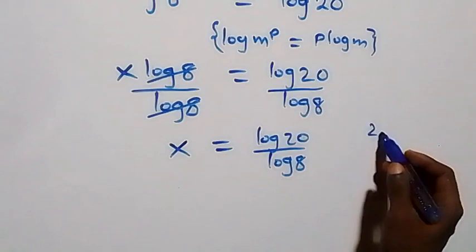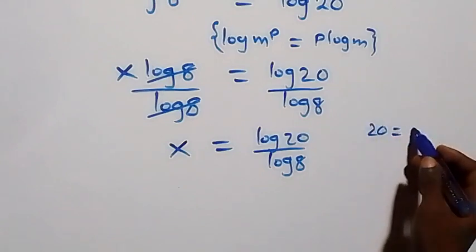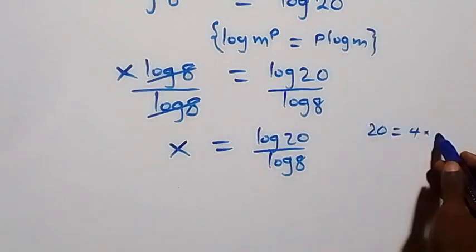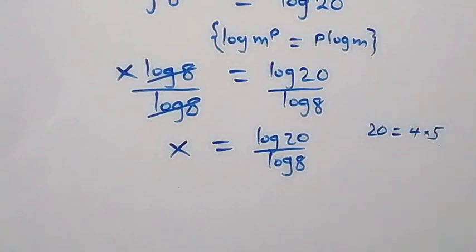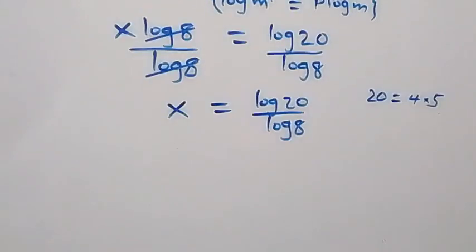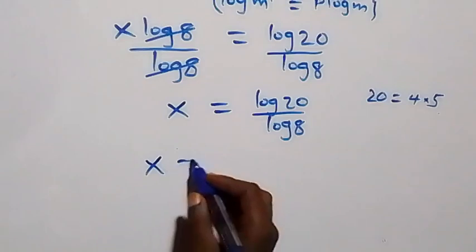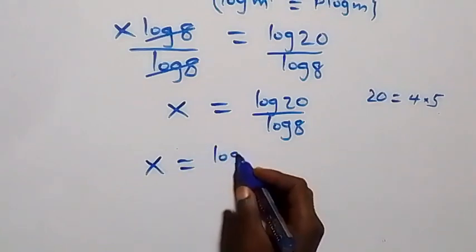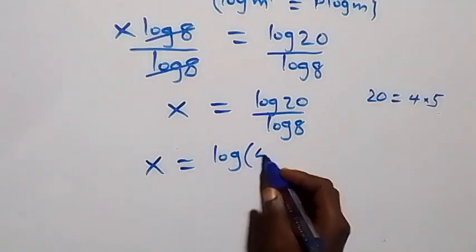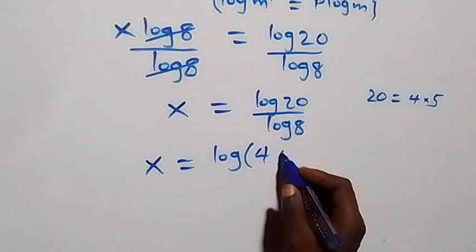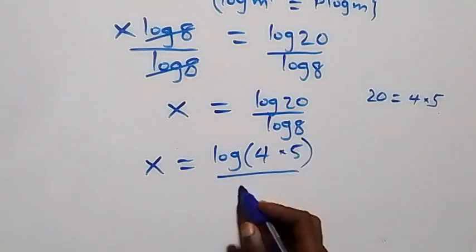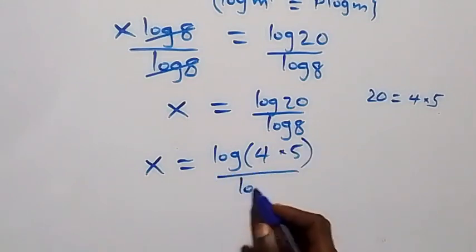Then in the next step, we can express 20 as 4 times 5, which implies this becomes x equals to log of the bracket 4 times 5, over log 8.